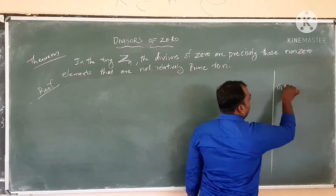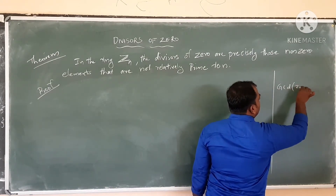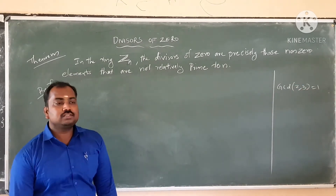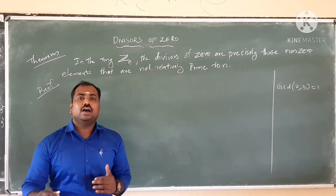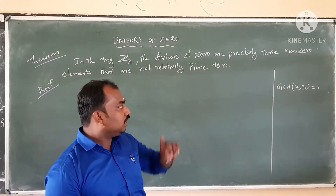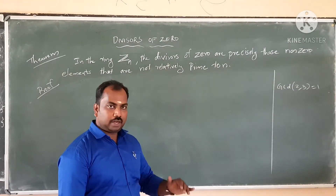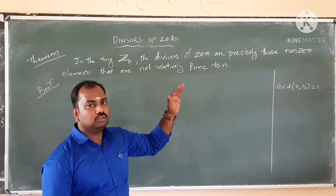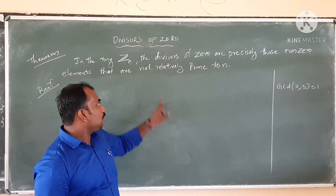Let me try it. GCD of 2 and 3 is equal to 1. Therefore, we can say that 2 and 3 are relatively prime. Or 2 is relatively prime to 3, or 3 is relatively prime to 2.